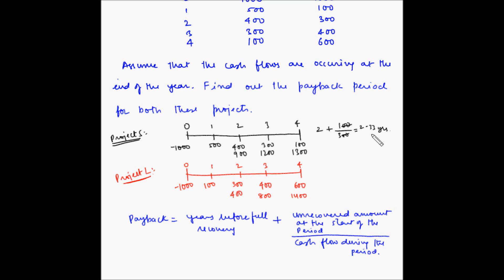This becomes 2.33 years, which can also be written as 2 years and 1/3 of a year, which is 4 months. So project S has a payback period of 2 years and 4 months.